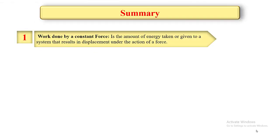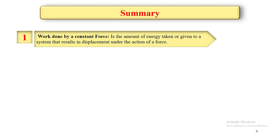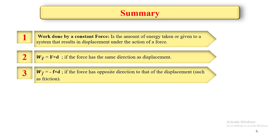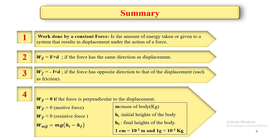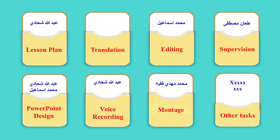At the end of the first part of this chapter, we can summarize the main points: the work done by a constant force is the amount of energy taken or given to a system that results in displacement under the action of a force. The expression of the work done by a motive force is F × D, and the expression for a resistive force is −F × D. If the force is perpendicular to displacement, the work is zero. If the work is greater than zero, it is motive work; if less than zero, it is resistive work. The expression of the work done by the weight is mg(H_initial − H_final). Thank you for watching this video and doing all the recommended assignments.